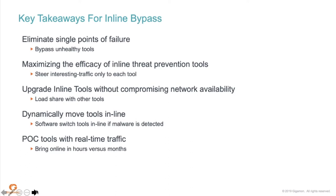We can define tool performance thresholds based on heartbeat profiles — if performing at 100%, send all traffic; if not, take the tool out. An alert will appear in the Fabric Manager as soon as there is a change in the state of the inline tool — you can define what type of alerts you want to receive, and it's very granular.